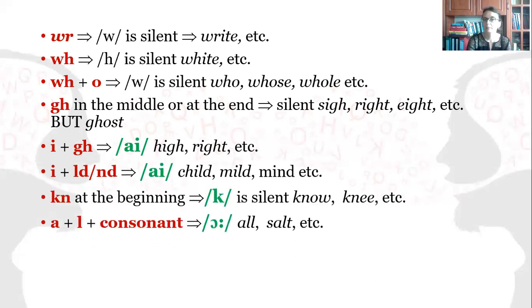I plus LD followed by LD or ND is pronounced as long I, and we have the example child, mild, mind.